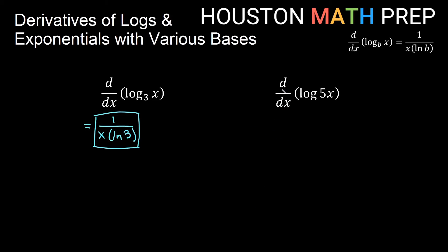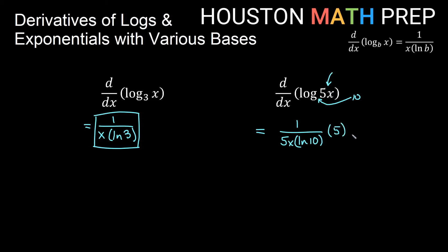Here we have the derivative with respect to x of log of 5x. Remember that when we have log with no base written, this is assumed to be base 10. The derivative of log of something is 1 over that something, so we get 1 over 5x, divided by ln of the base — ln 10. Then don't forget the chain rule: multiply by the derivative of 5x, which is 5. The 5s cancel top and bottom, giving us 1 over (x times ln 10).